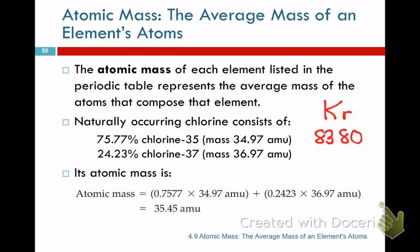This is known as the average atomic mass calculation. 75.77% of chlorine has a mass of 34.97 AMUs. That 34.97 is a little lower than 35 — which would be protons plus neutrons. The reason it's slightly different is because of the energy required to keep the nucleus together; that mass goes into binding the nucleus.